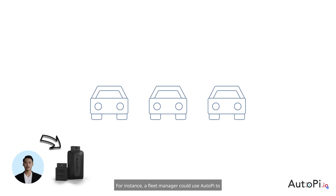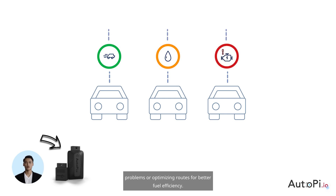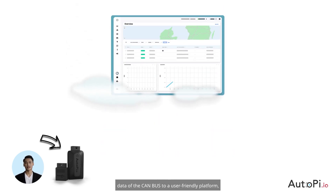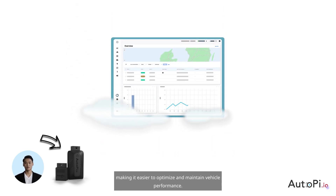a fleet manager could use AutoPi to monitor the health and efficiency of multiple vehicles, identifying issues before they become major problems, or optimizing routes for better fuel efficiency. The AutoPi serves as a bridge, bringing the complex data of the CAN bus to a user-friendly platform, making it easier to optimize and maintain vehicle performance.